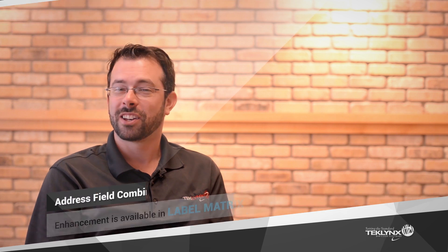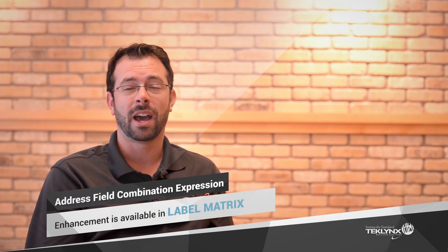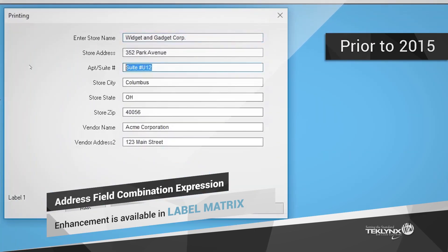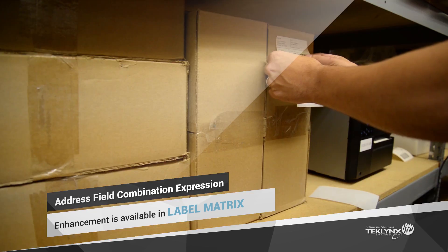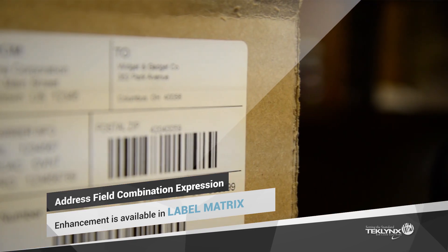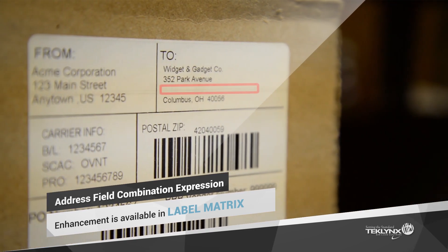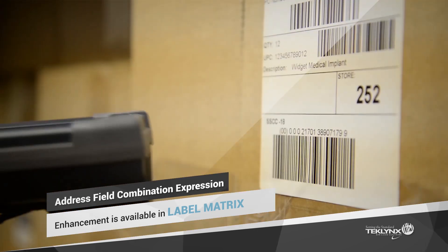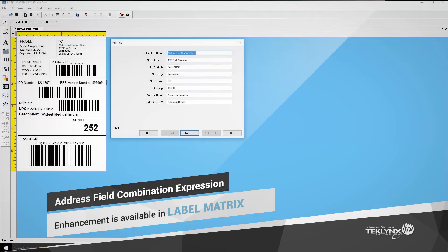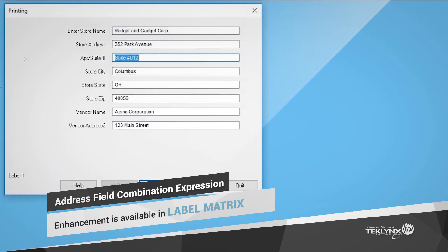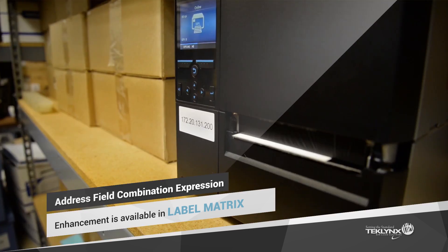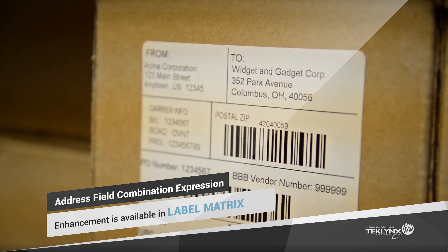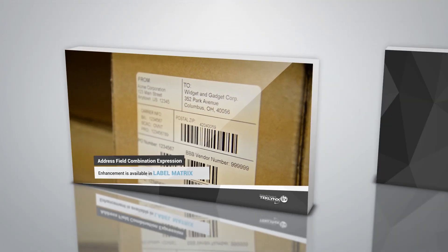Sometimes address information has extra lines, sometimes it doesn't. That's why we developed the address field combination expression in LabelMatrix. Before, address information that did not contain a second or third line would translate into a blank space on the label, and users had to create a complex expression to get rid of that space. The address field feature in LabelMatrix has been enhanced to exclude blank rows automatically, allowing users to easily handle address information that may not include things like apartment or building numbers. This cures complications for a wide range of users.